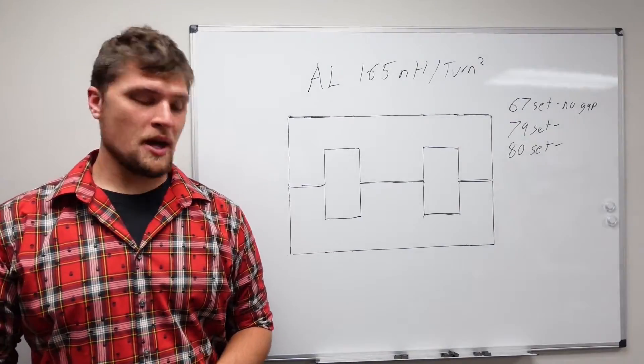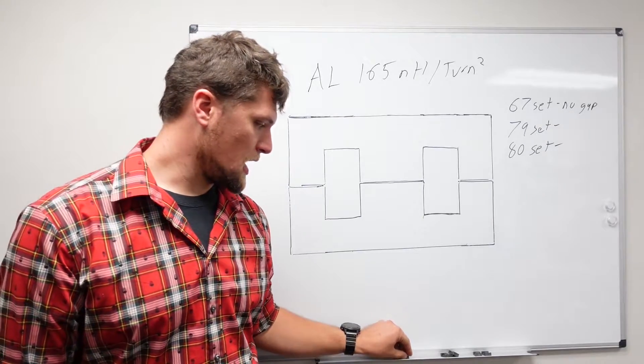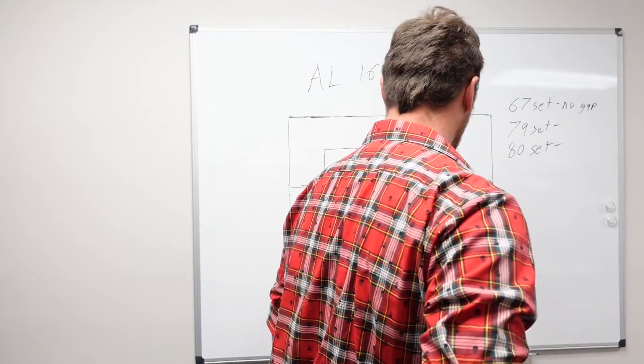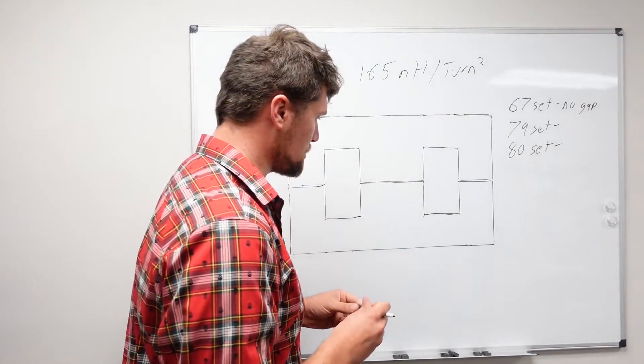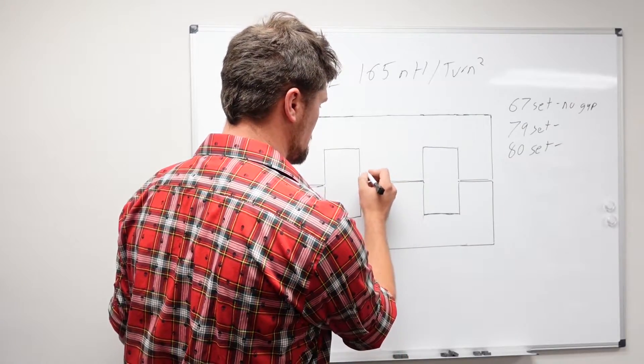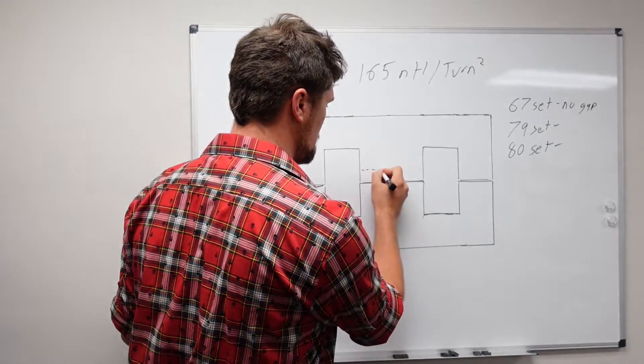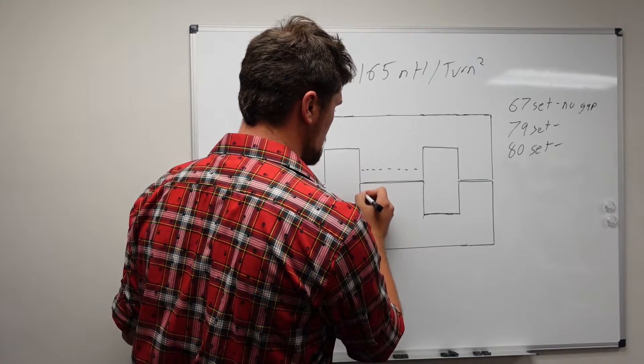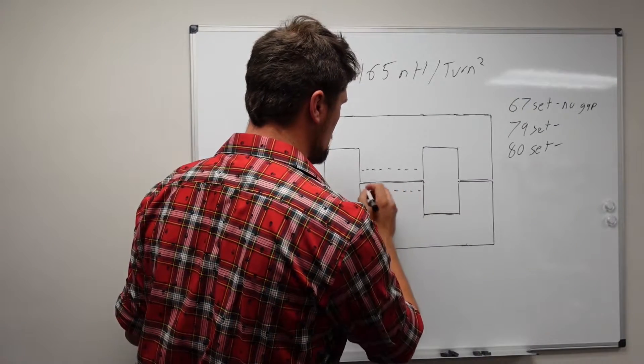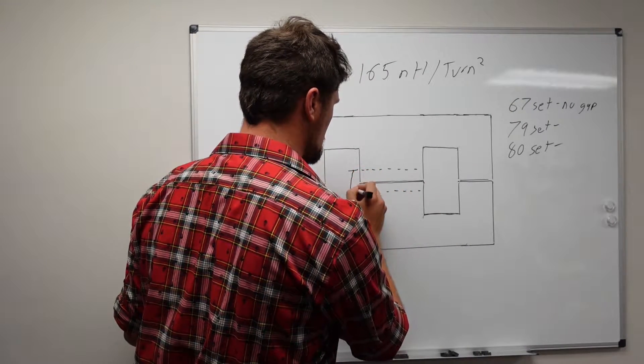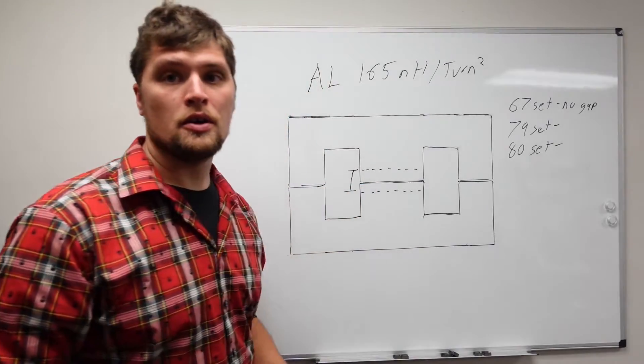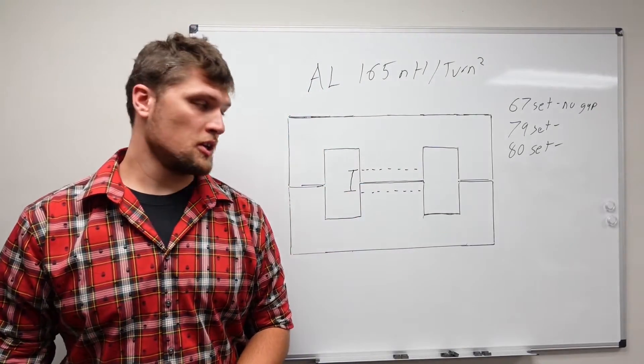Okay, so we're back from the machine shop with our gapped cores. In order to gap these, we basically ground out some of the center post here. So we're calling this distance here our gap length along the magnetic path.